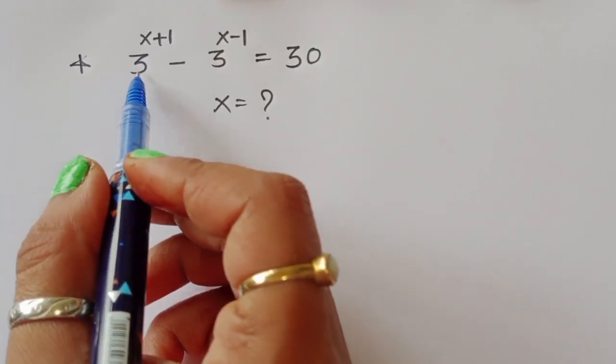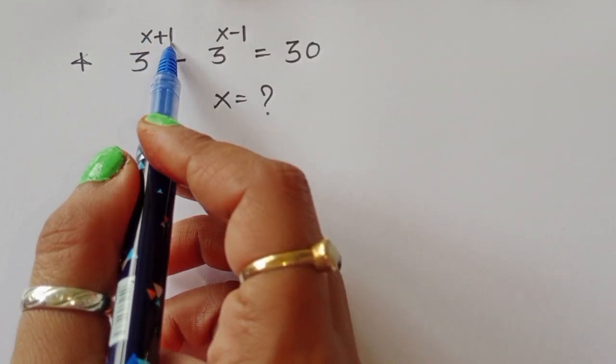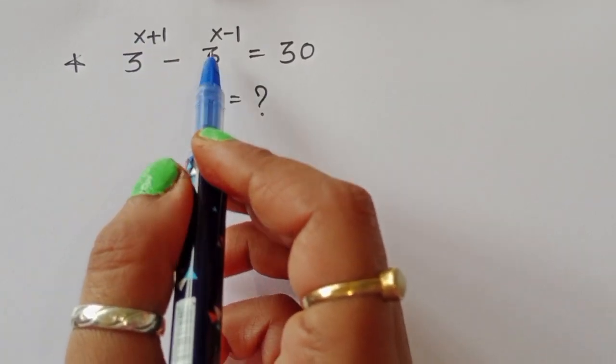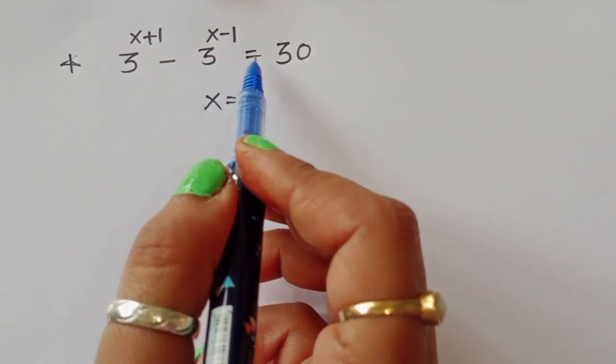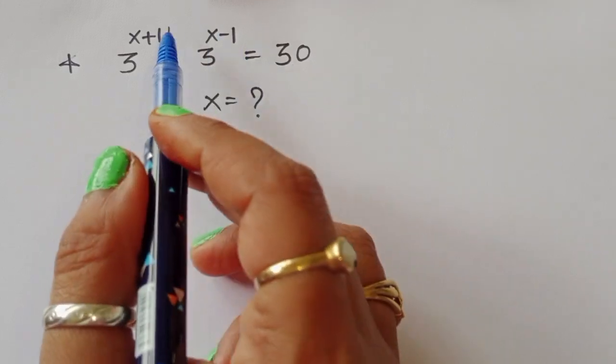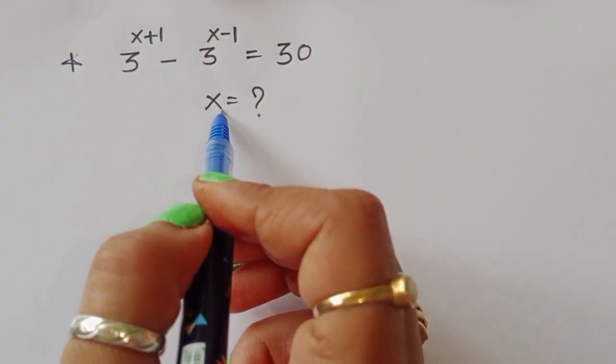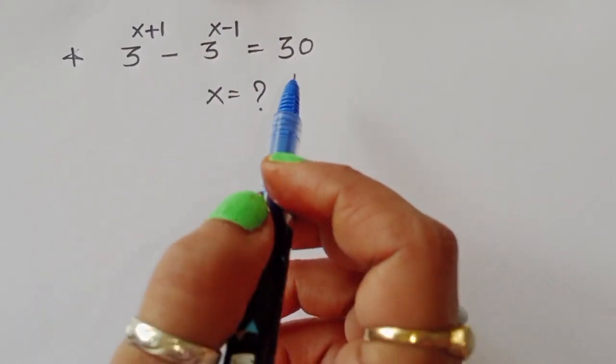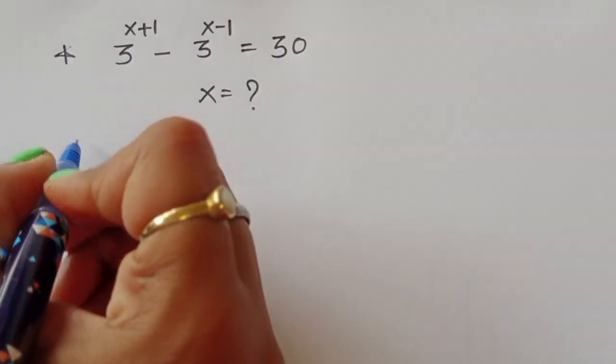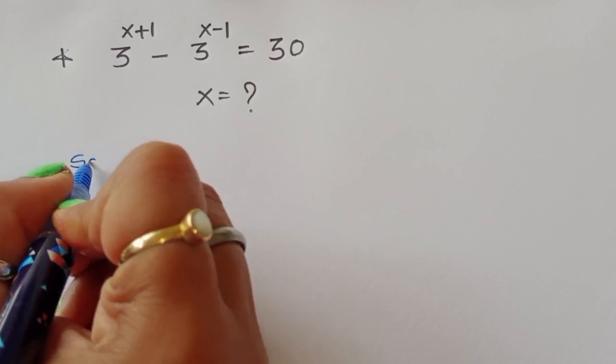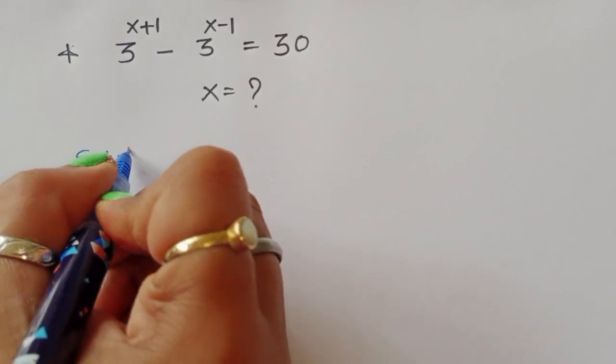The question is: given 3^(x+1) minus 3^(x-1) is equal to 30, we have to find out the value of x. Let's see the solution.